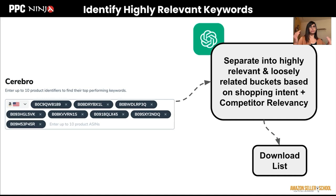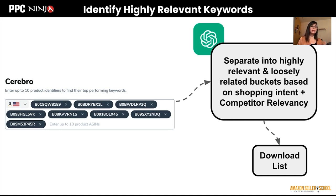Everybody knows that Cerebro can give you a list of keywords, but the problem with that output is that you can't just use it as is. You have to do a second pass on it to figure out if those keywords are relevant or not. Just because they are ranked or visible for those products doesn't mean they are the right keywords for you. So what you want to do is clean up that Cerebro output by asking ChatGPT to do a quality check of that list of keywords.